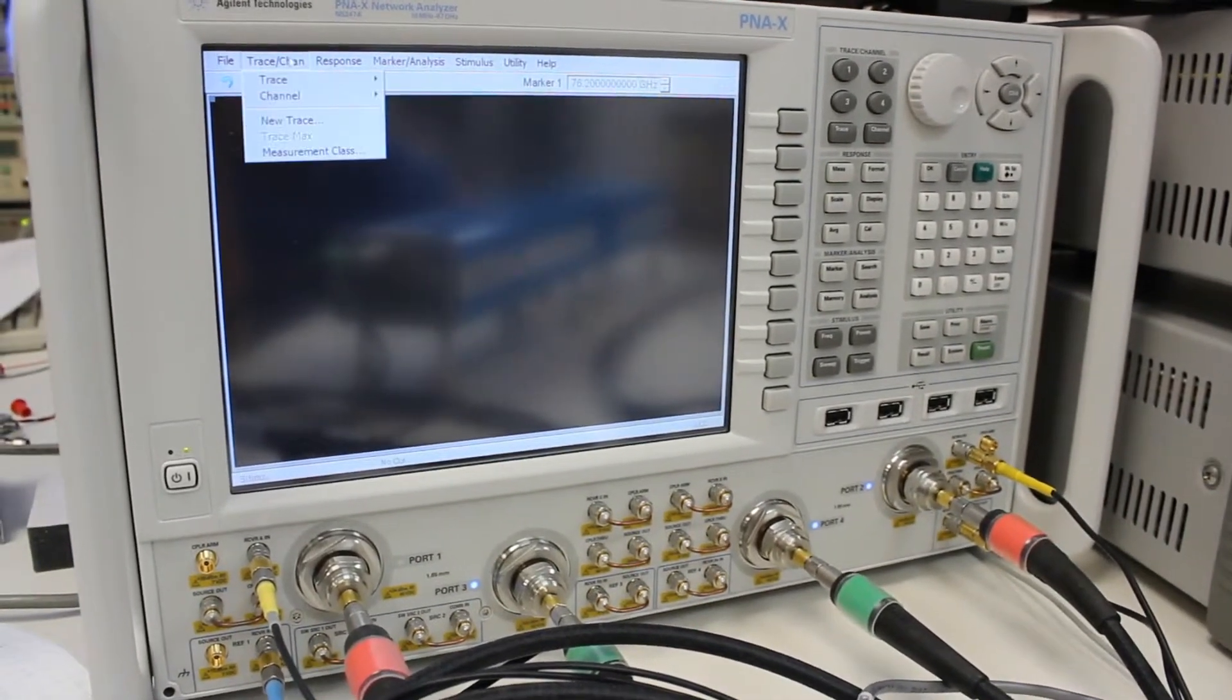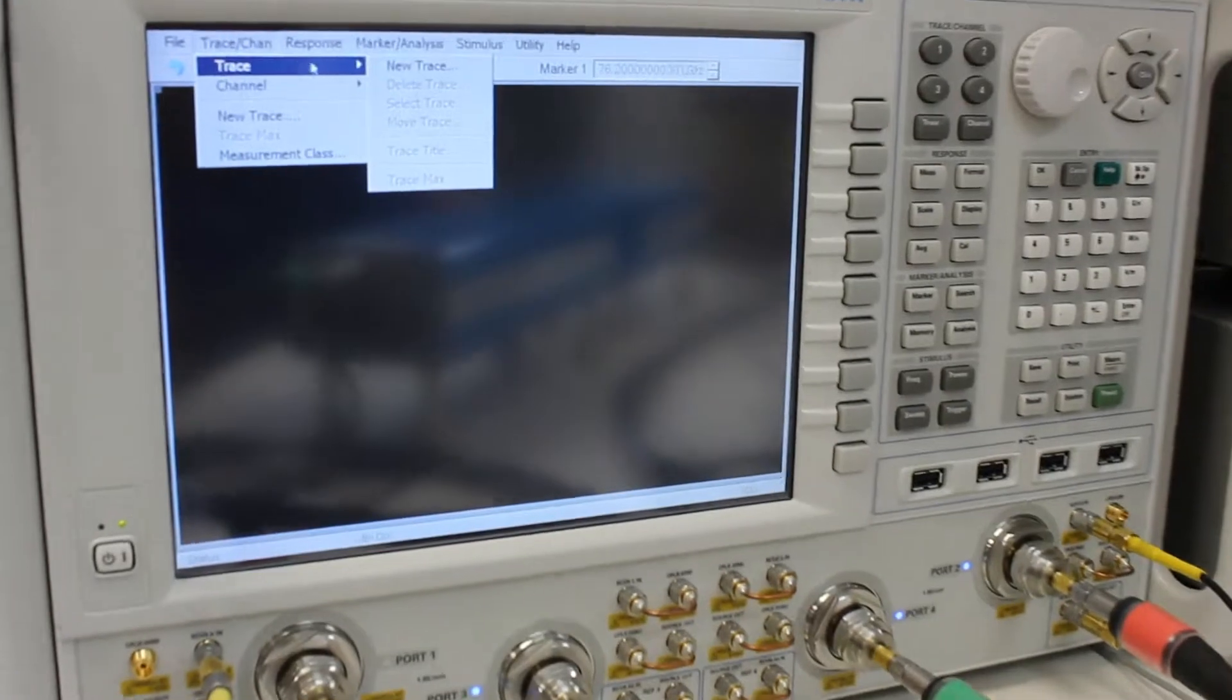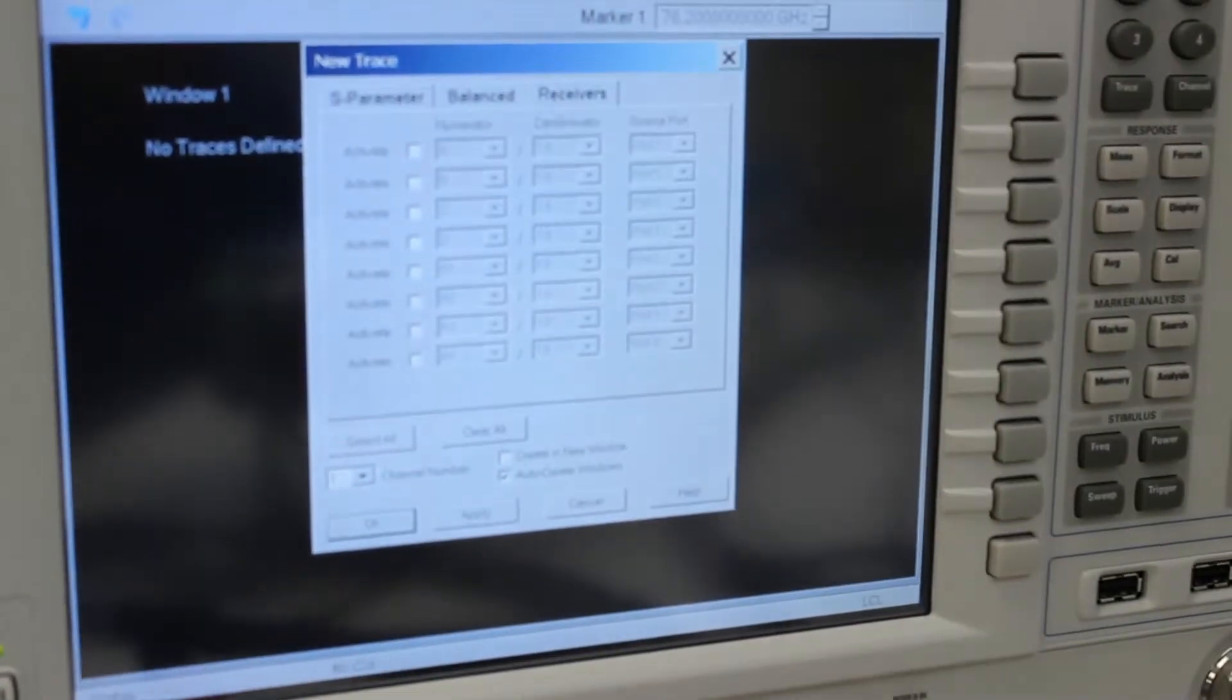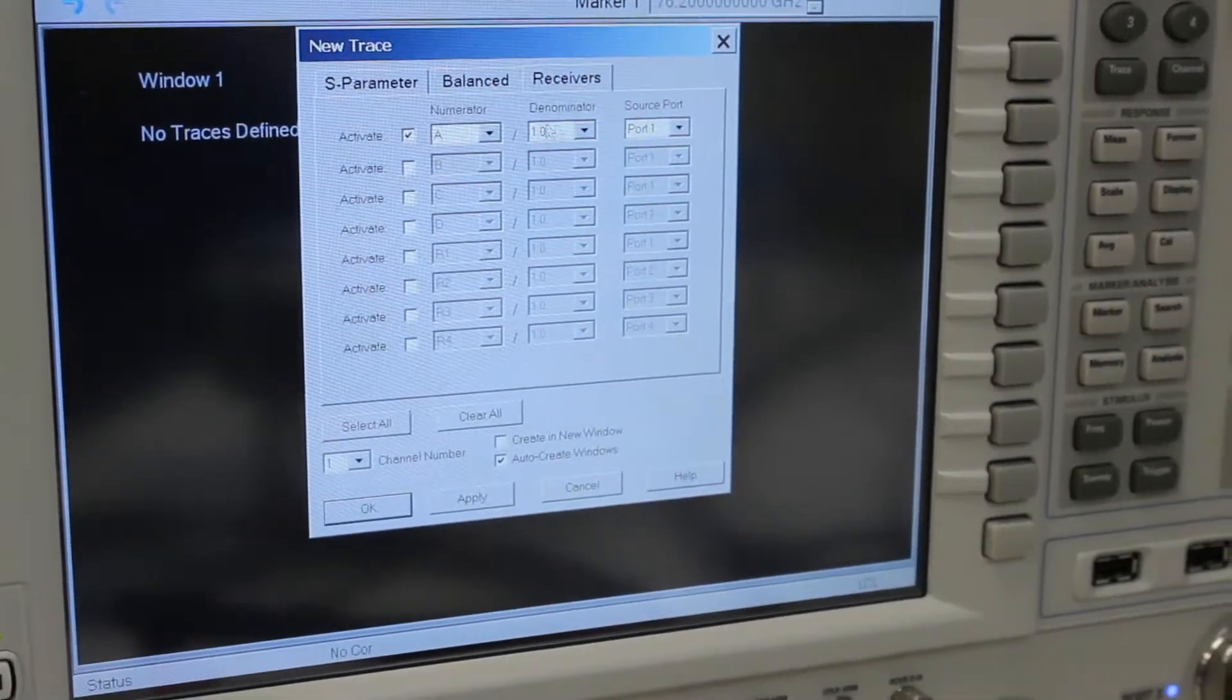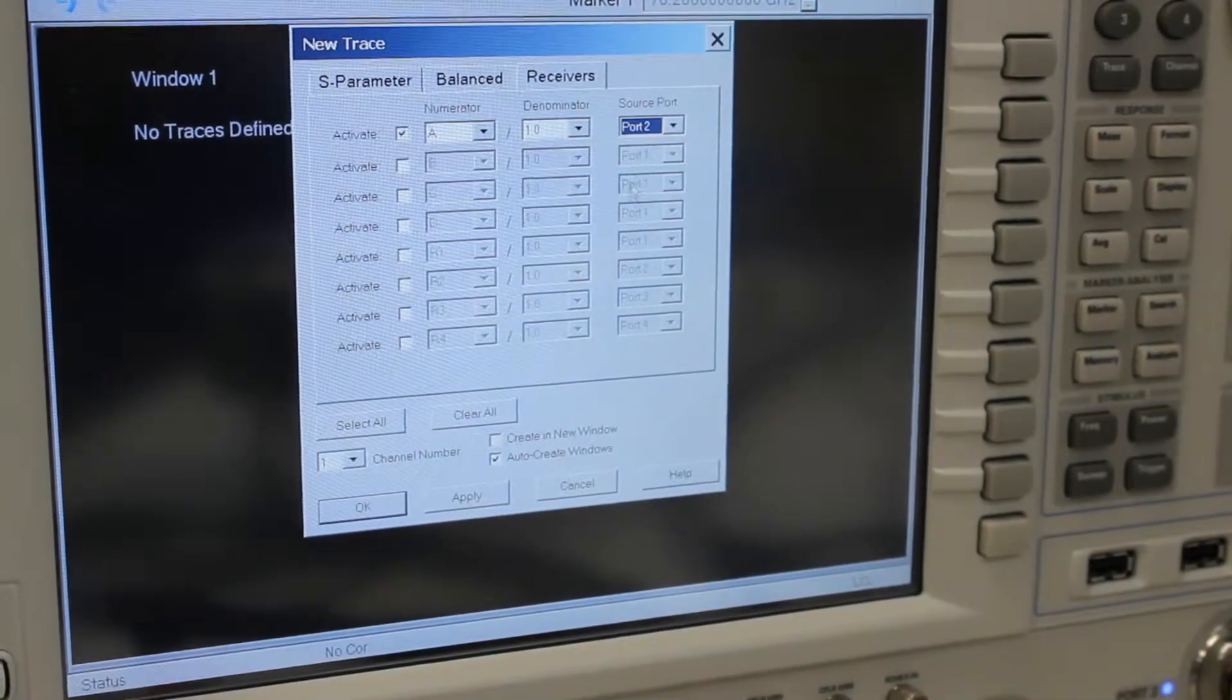To set up a new trace, select Trace Channel, Trace, and then New Trace tab. Under the New Trace tab, select Receivers. Activate A1 with port 2.